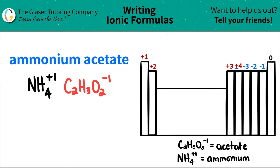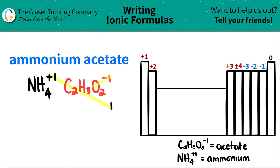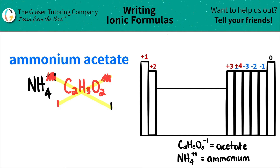Now we have both components and we're just going to crisscross the charges — it's a little trick to see how many of each we need. This plus one will crisscross down telling me I only need one of the acetate, and the negative one will crisscross down telling me I only need one of the ammonium. Once you do this trick, you can cross out the charges and just focus on the numbers.